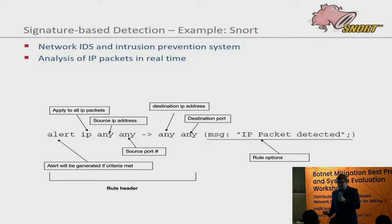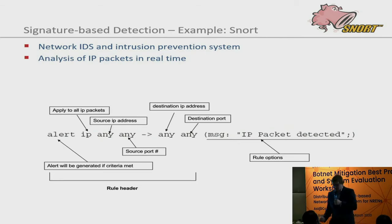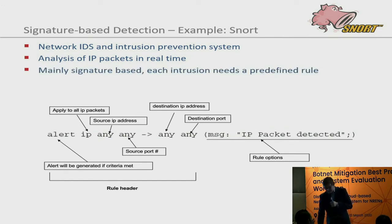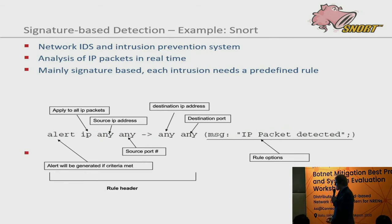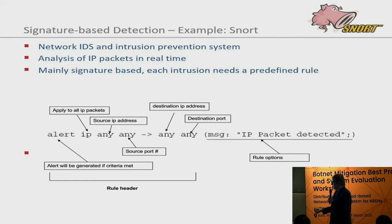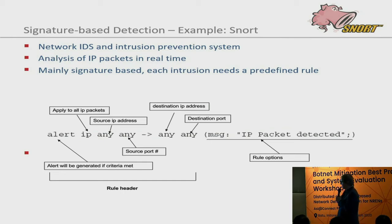One example of a signature-based IDS is SNORT — an open source IDS and intrusion prevention system that analyzes IP packets in real time. You need to define rules before using the system. Here is an example rule that would generate an alert for all IP packets regardless of source or destination IP address and port — just to illustrate how rules are configured, not a useful detection rule.